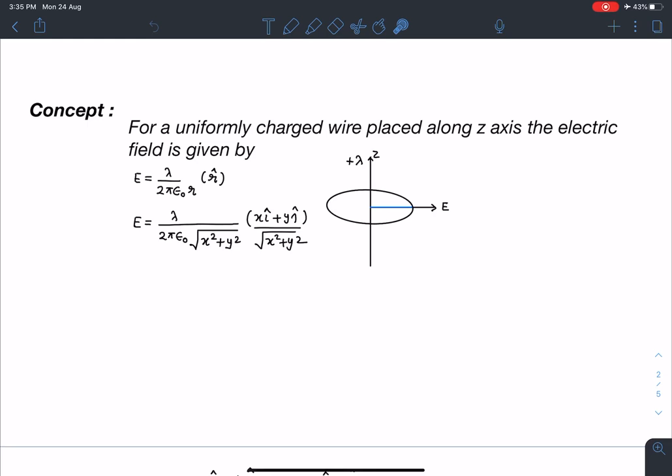So I can simply write this r as root of x square plus y square. So here this E expression I can write as lambda by 2 pi epsilon 0 x square plus y square xi plus yj cap divided by x square plus y square under root of it. So this is the field given by a wire placed along z axis.